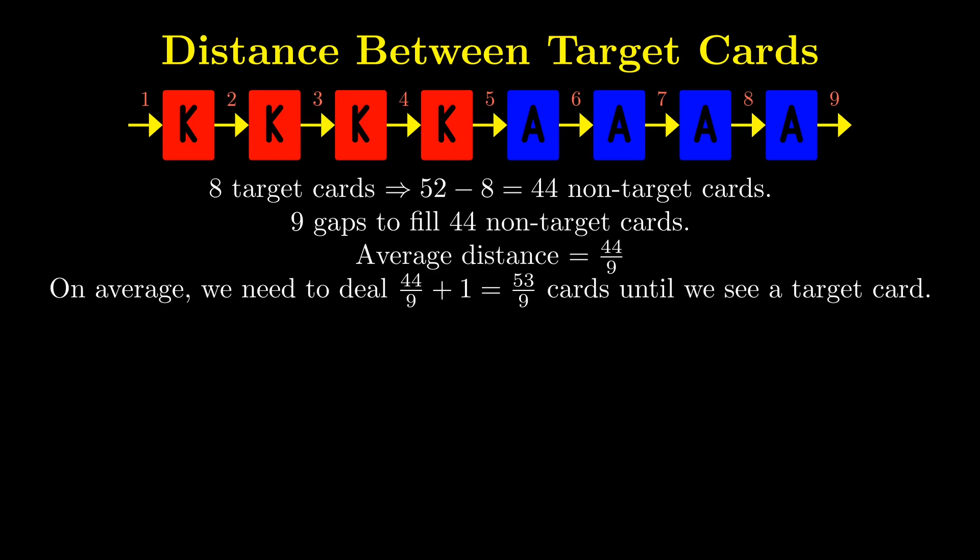On average, we need to deal 44 over 9 plus 1, or 53 over 9 cards until we see a target card.